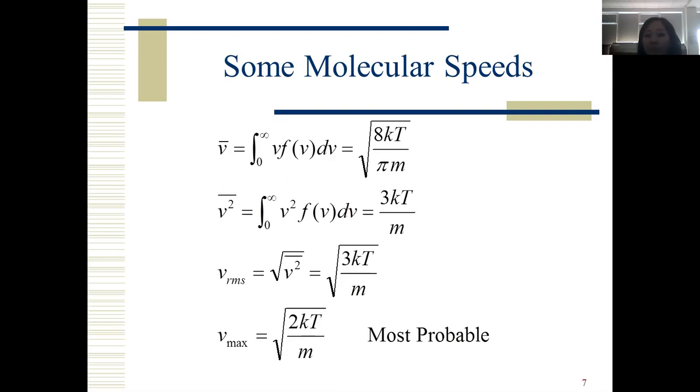Some molecular speeds. In the Maxwell distribution, you recognize some velocities as arithmetical velocity, most probable velocity, and average velocity. First, square root 8kT over πm, it is arithmetical velocity. Most probable velocity is square root 2kT over m, and square root 3kT over m is average velocity.